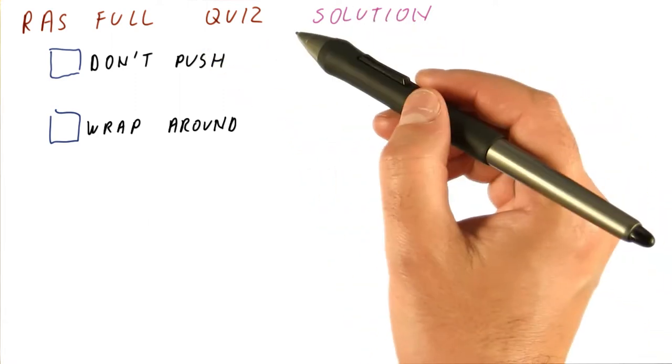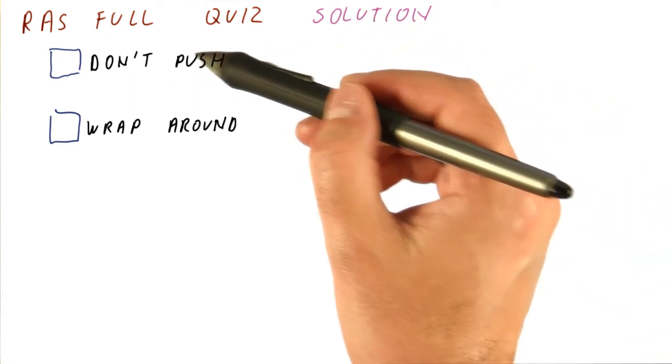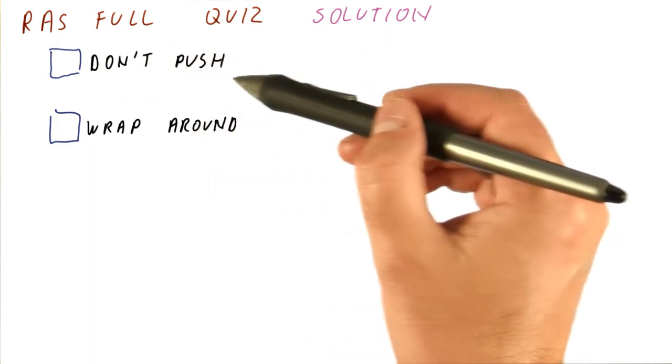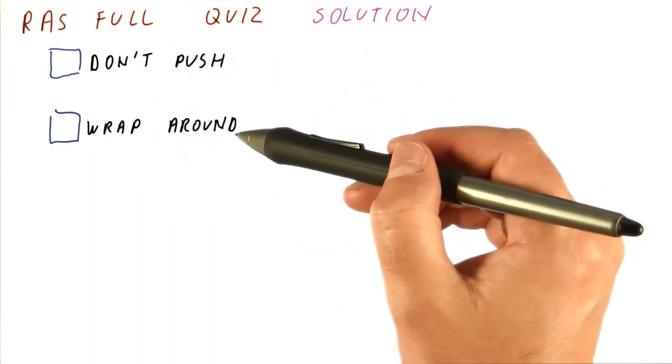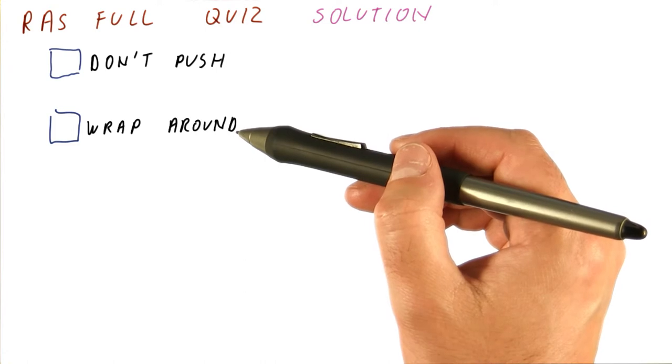Let's look at the solution to a RAS full quiz. So the question was, is it better to not push anything anymore once the RAS is full, or simply wrap around and keep overwriting old addresses with new ones?